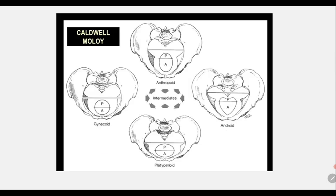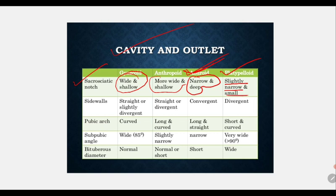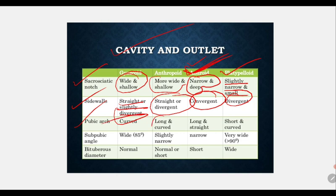The Caldwell-Moloy classification describes four pelvic types: gynecoid, android, anthropoid, and platypelloid. The sacrosciatic notch is wide and shallow in gynecoid, wide and shallow in anthropoid, narrow and deep in android, and slightly narrow in platypelloid. The side walls are slightly divergent or straight in gynecoid, divergent in anthropoid and platypelloid, and convergent in android. In android, everything is narrow, deep, and convergent.